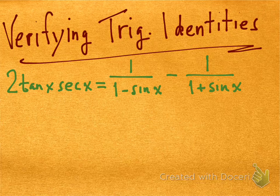It's example number four on page 531 if you want to check it out. It says 2tan(x)sec(x) equals 1/(1-sin(x)) minus 1/(1+sin(x)). It's kind of hard to say all that stuff. But anyway, it's definitely a more complicated looking identity.